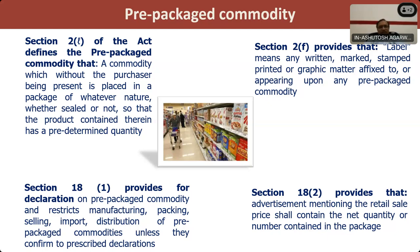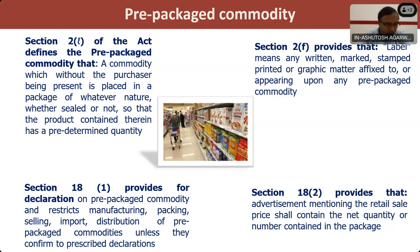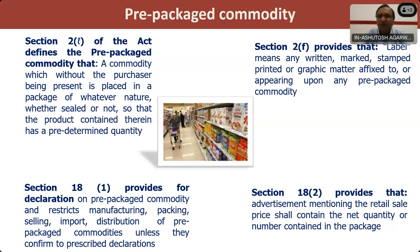As Dixit sir was saying, Section 18 prescribes for prepackaged commodities — the declaration part — what declarations are required on a prepackaged commodity, without which it is not allowed to sell, distribute, deliver, or expose for sale. If we are making any advertisement of price, the quantity should also be declared with the price. This is Section 18. The penal provisions for packaged commodities are made under Section 36.1 and 36.2.